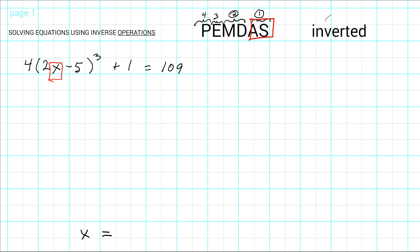Inverse operations means do PEMDAS in the opposite direction. You're trying to isolate the x by first adding or subtracting, then multiplying or dividing, then seeing if there's exponentiation to get rid of, and that will usually end up getting rid of your parentheses at the same time.